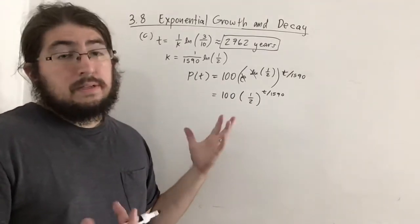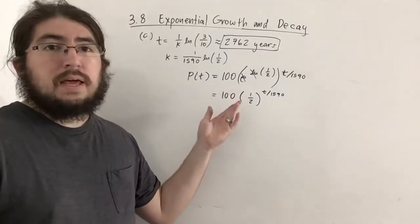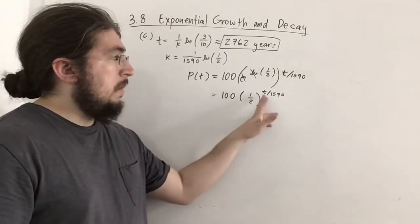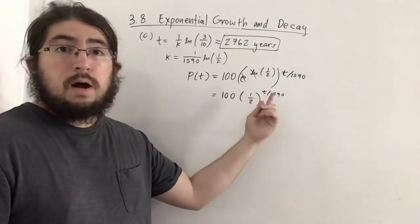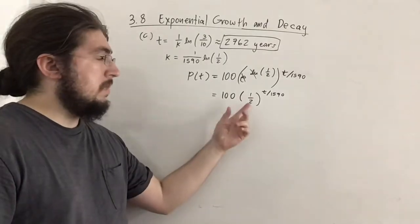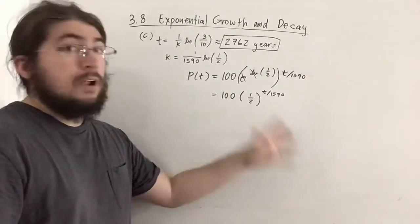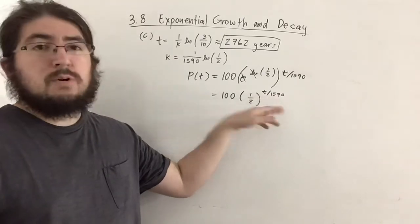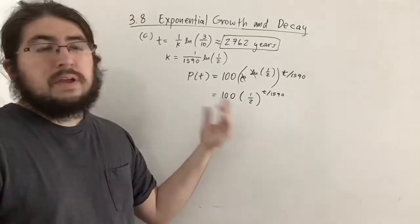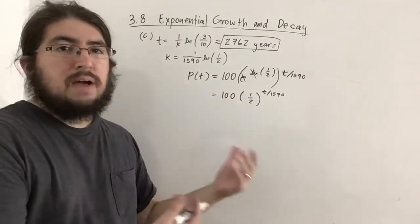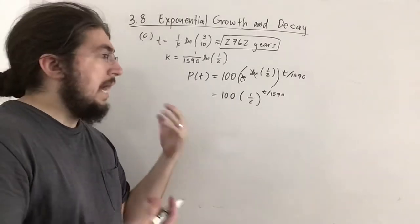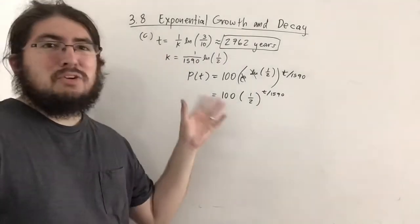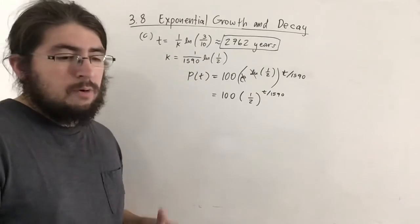This form is better in some sense because it really shows the half-life: after 1590 years the exponent is 1, giving 100·(1/2) = 50. After 3180 years the exponent is 2, so (1/2)² = 1/4, giving 25 — half of half of 100. This idea makes a lot of sense for what half-life means, but it's beyond what the question asks.